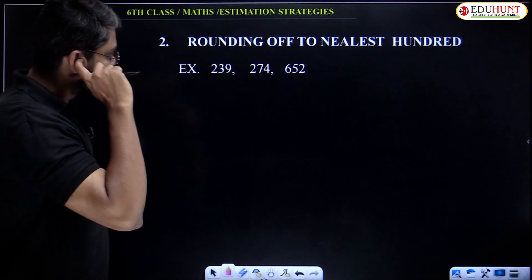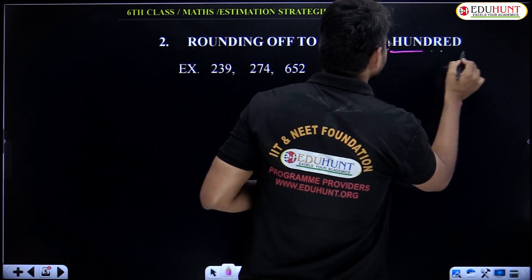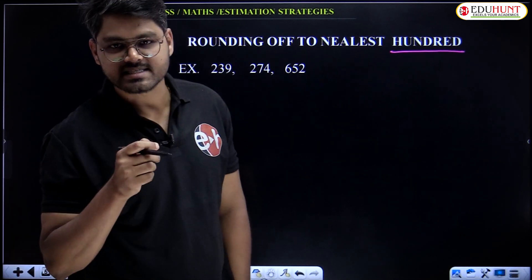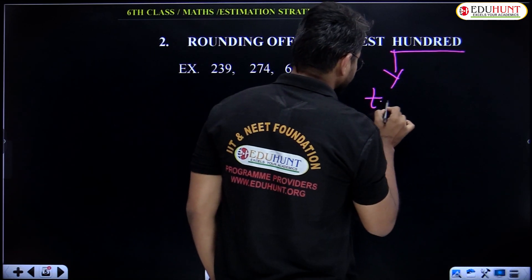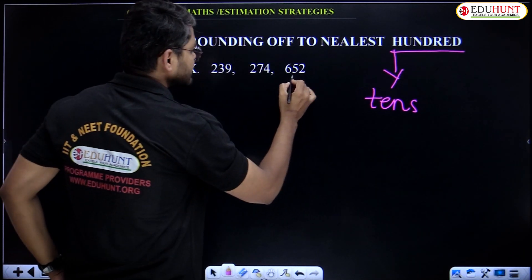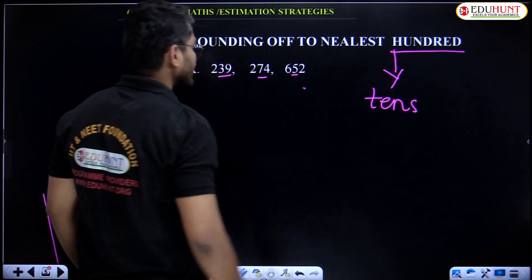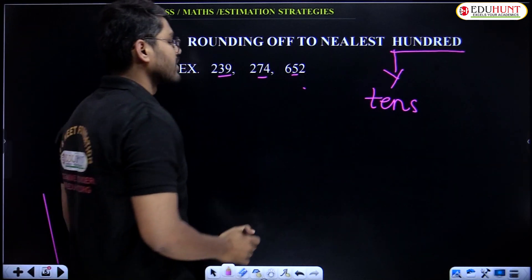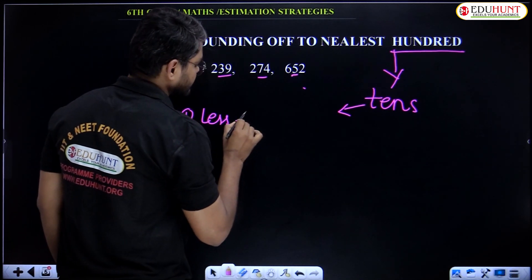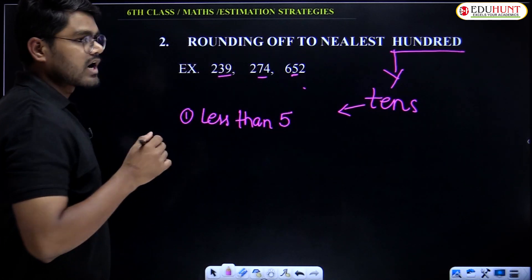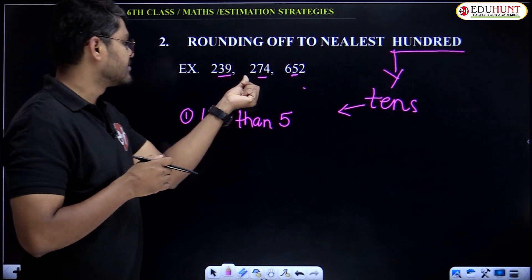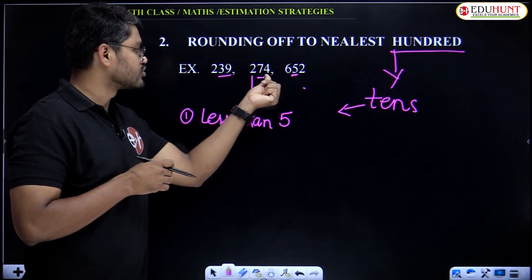Rounding off to the nearest hundred. In the previous one, we saw nearest tens. Now, hundreds. For hundreds, which digit do we have to consider? We have to consider the tens digit. Same formula applies. First condition: if the tens digit is less than 5, keep the hundreds digit as it is and remaining digits should be 0s.